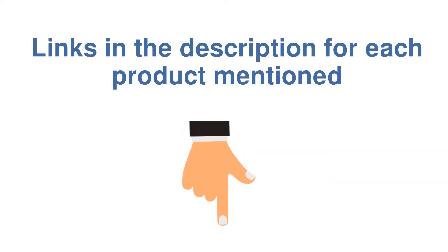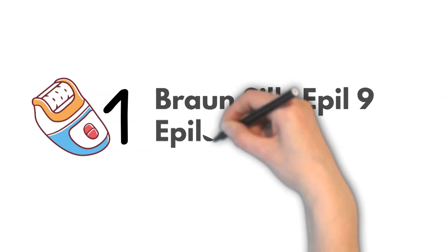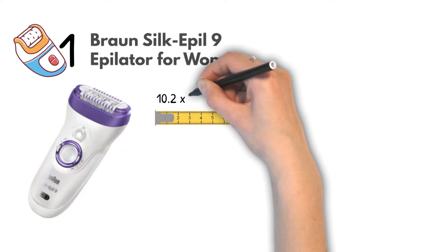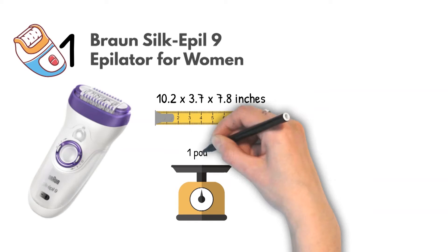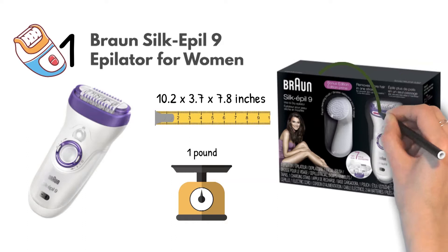At number 1, we have the Braun Silk-épil 9 epilator for women. Dimensions of this product are 10.2 x 3.7 x 7.8 inches and it weighs 1 pound. The Silk-épil 9 wet and dry epilator for women comes in a bonus edition with a facial cleansing brush.